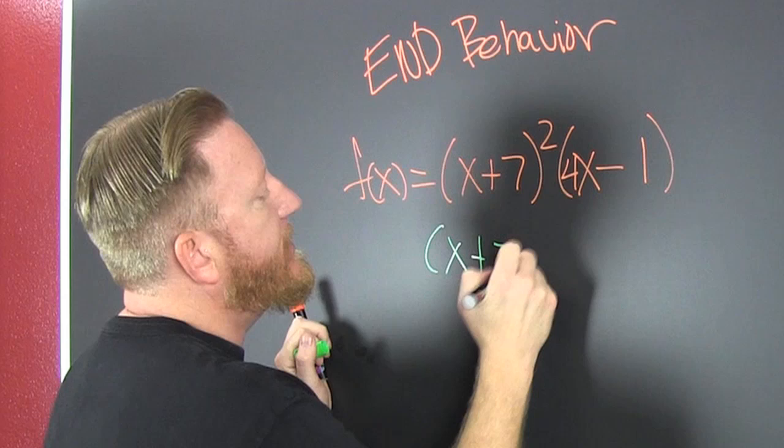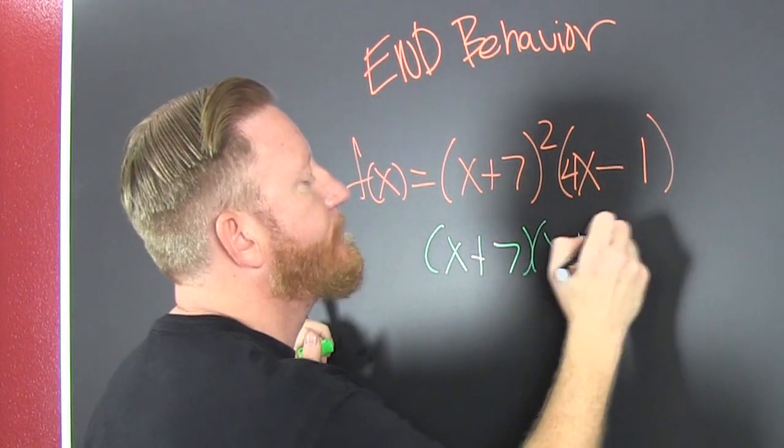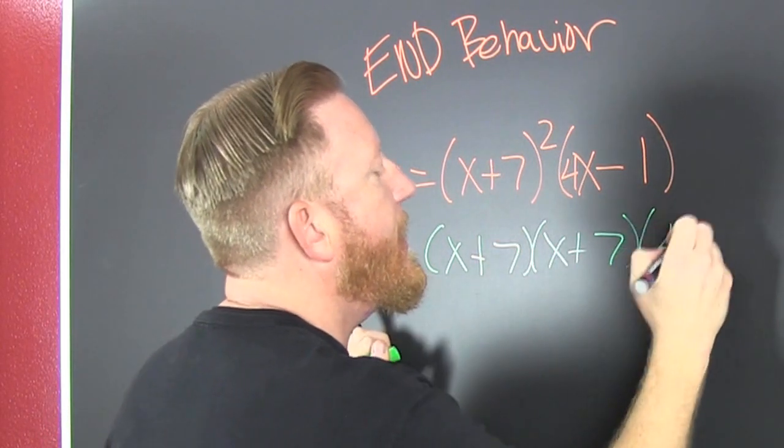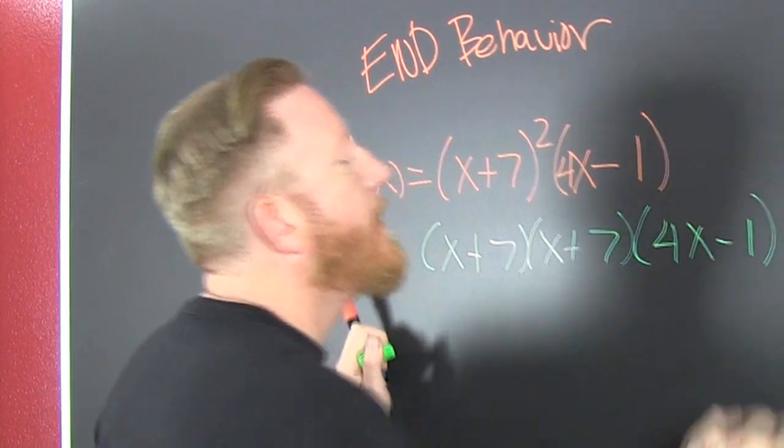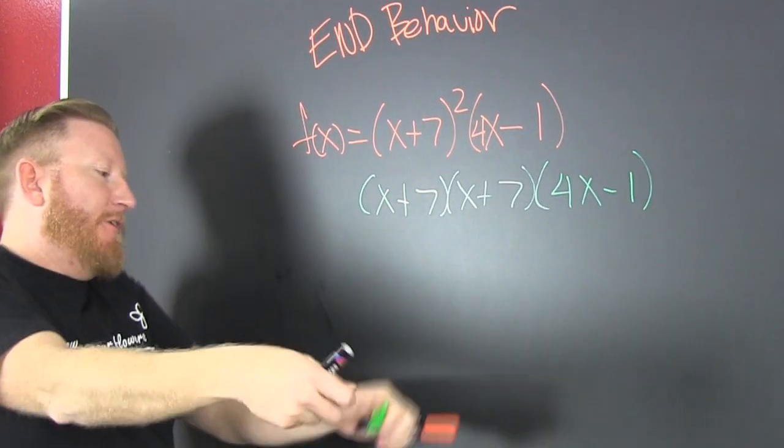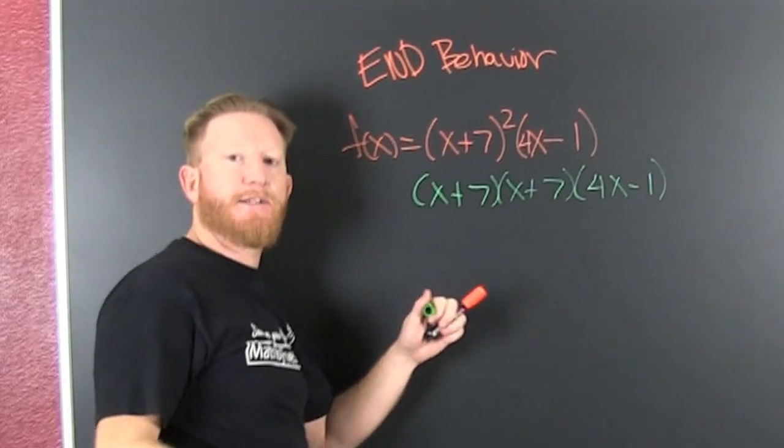We would write this out. And then we'd first, inner, outer, last. First, inner, outer, last. Gather, collect, and combine.